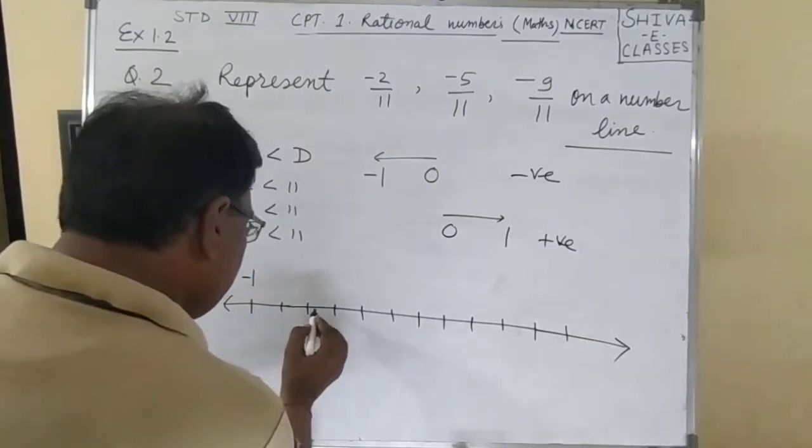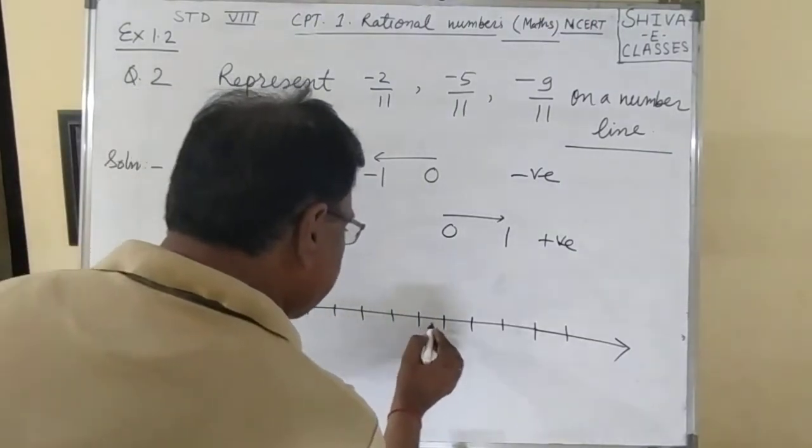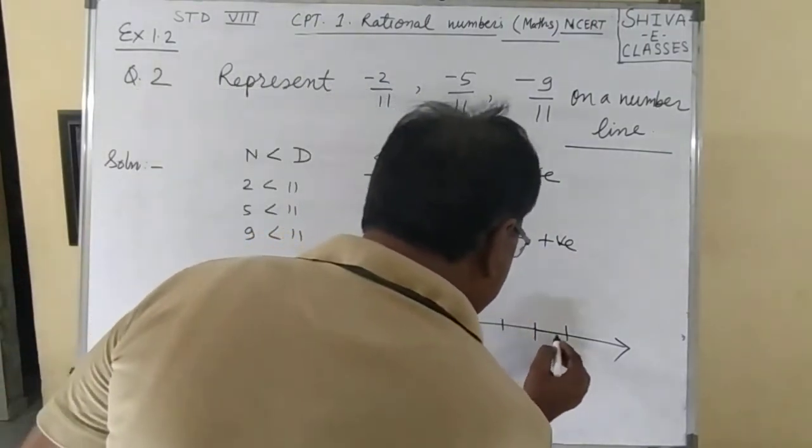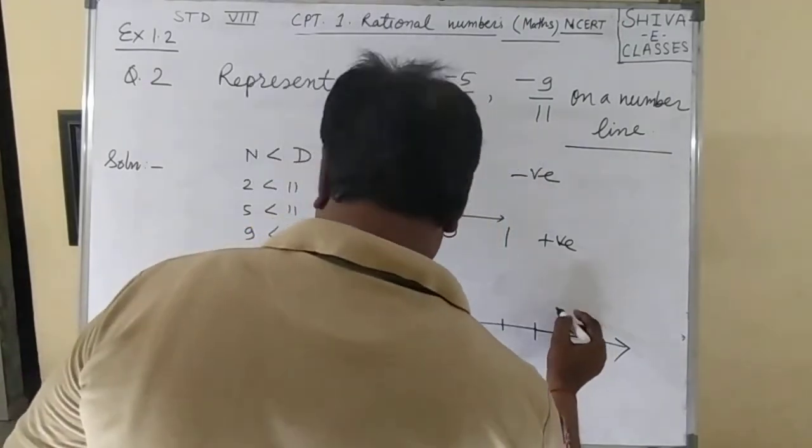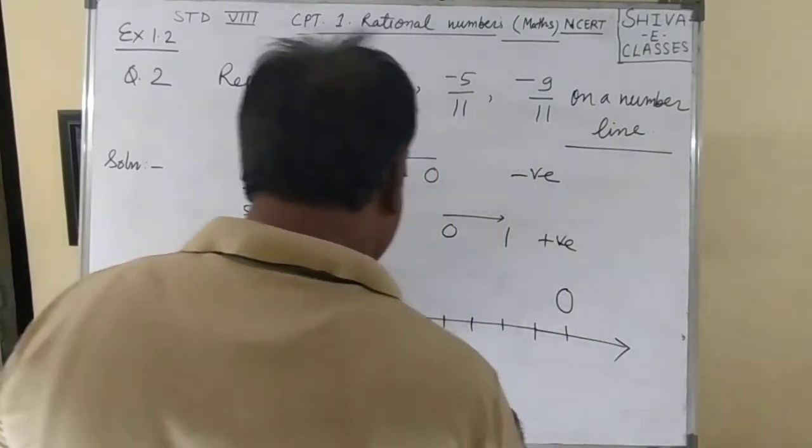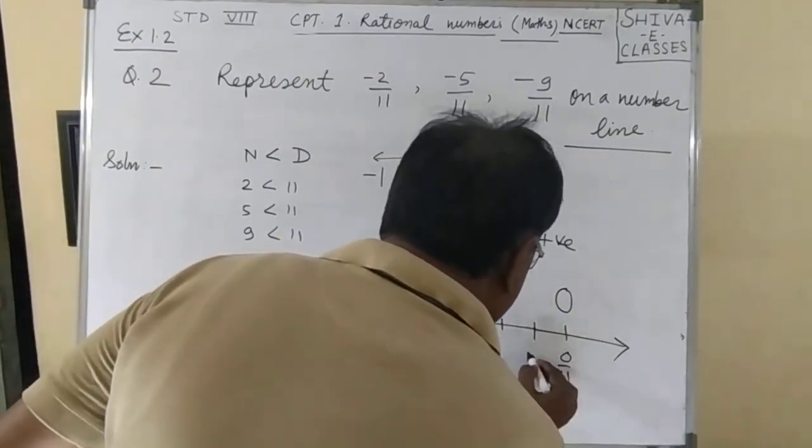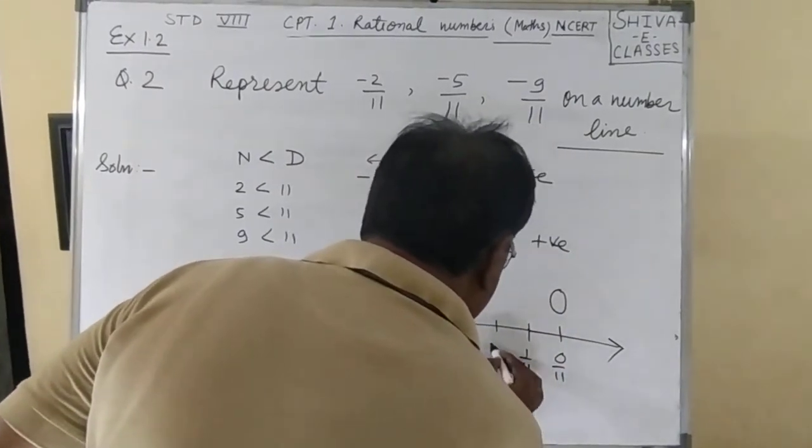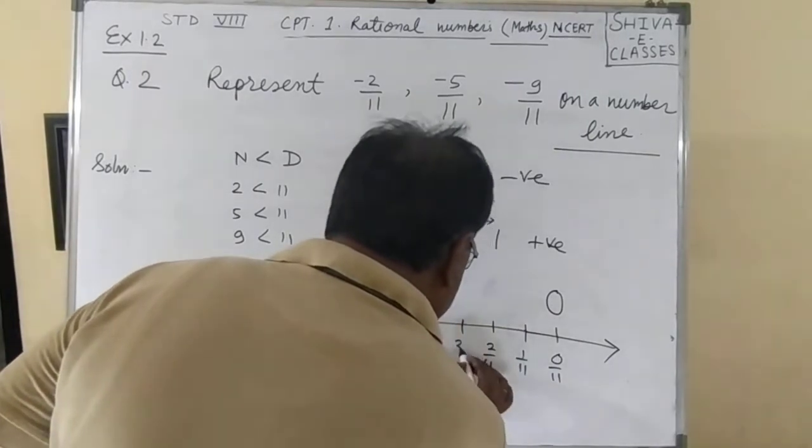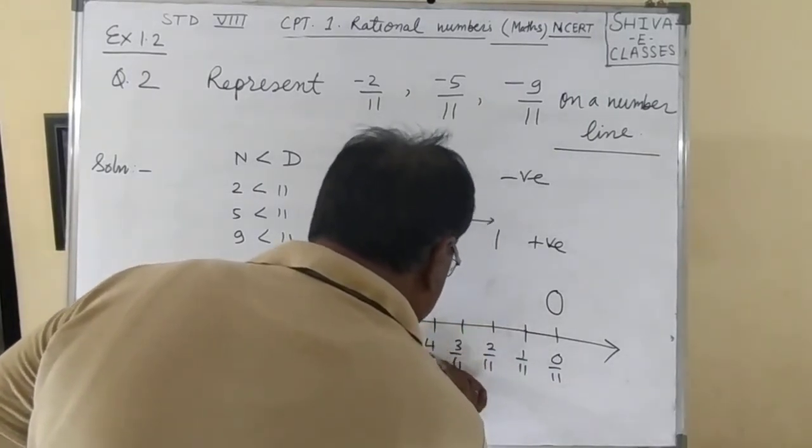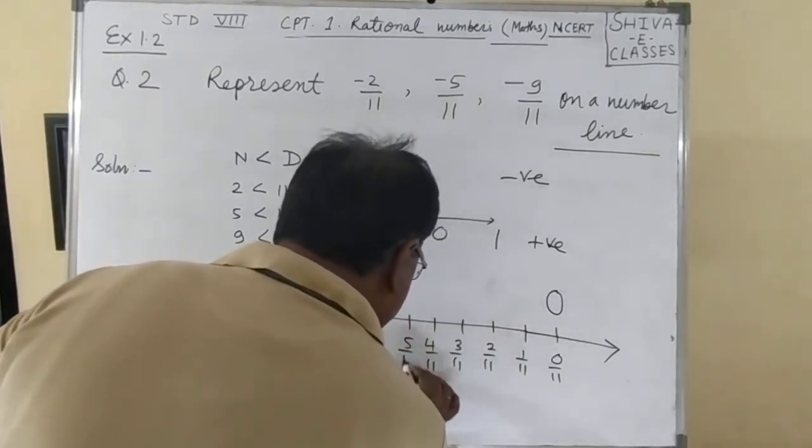Now we label these: 1, 2, 3, 4, 5, 6, 7, 8, 9, 10, 11. So this is 0, now here we have 0/11, -1/11, -2/11, -3/11, -4/11, -5/11.